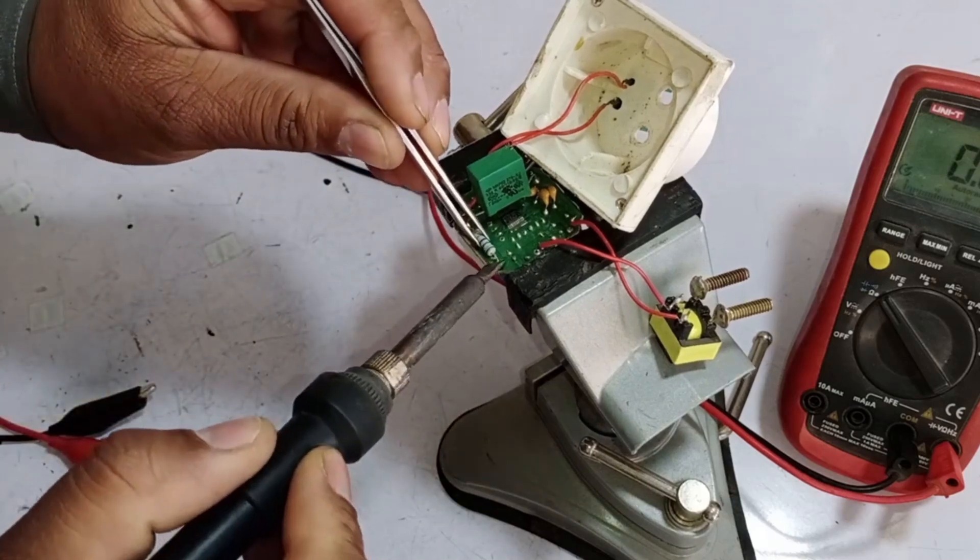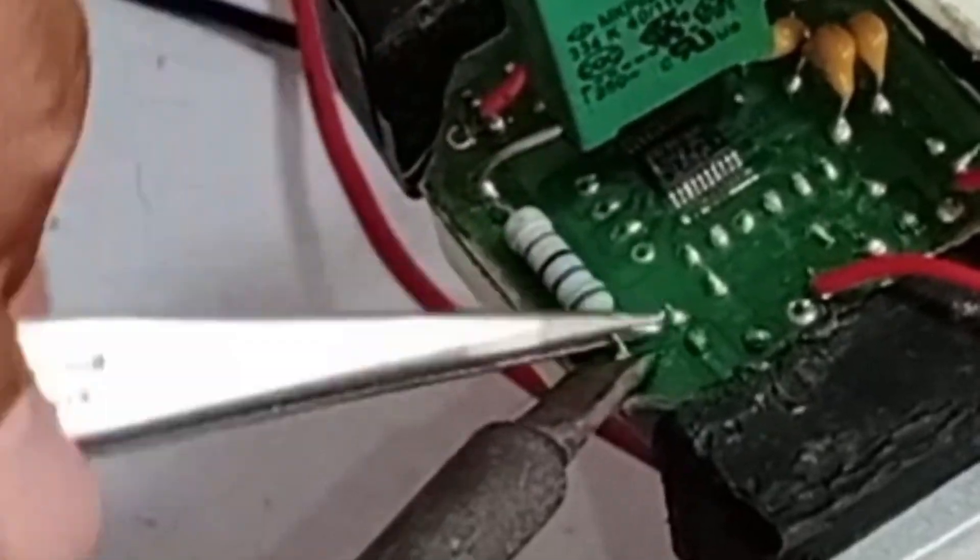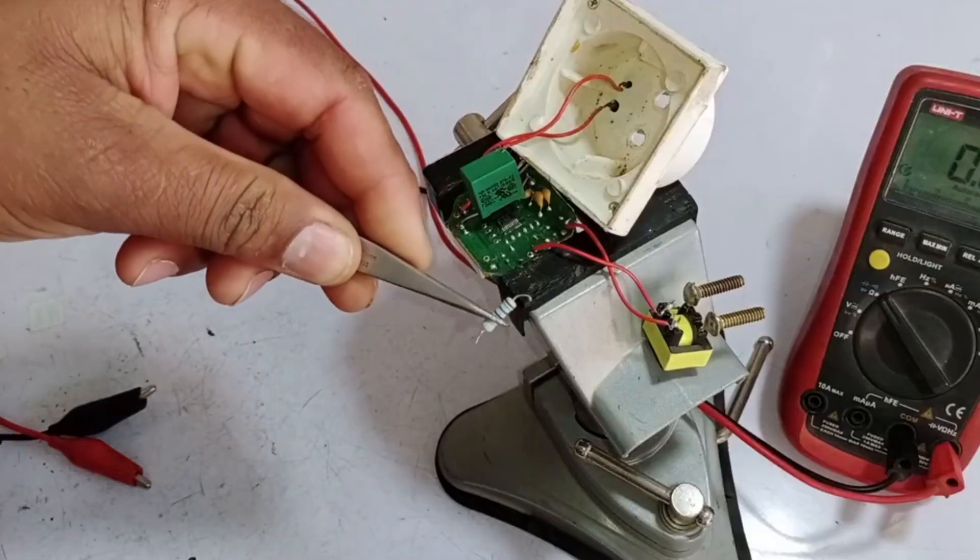Using a bit of heat, it will come off easily. After heating, the resistor has been removed.